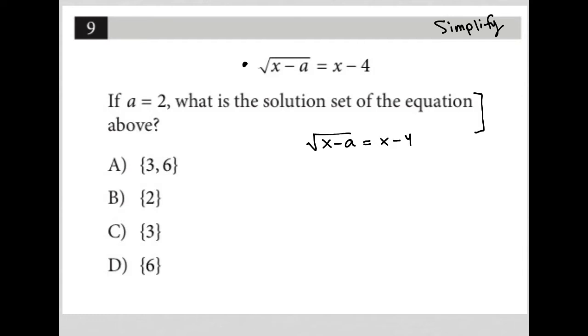To simplify this, I am going to square both sides of the equation. In doing so, my square root and power of two goes away. I'm left with x minus a equals x minus four times x minus four. x minus four times x minus four is equal to x squared minus 8x plus 16.